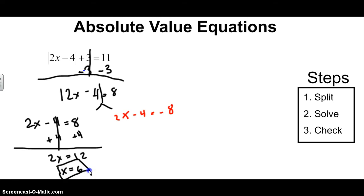Now we're going to do our second solution. So if we come to this side over here, the second part of the split, what we're going to do here is once again add 4, and we get 2x is equal to negative 4, divide by 2, and we get our second solution is x equals to negative 2. So those are your two solutions.